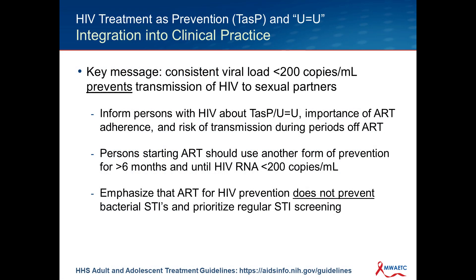There is a new section on treatment as prevention and U equals U, or undetectable equals untransmittable. We've talked about the data and those messages here before. Certainly worthwhile to become familiar with the data and the messaging around these things, especially U equals U. The guidelines panel has added language that a consistent viral load below 200 copies per milliliter prevents transmission of HIV to sexual partners.